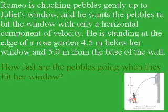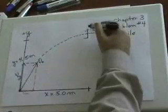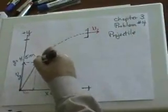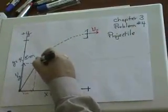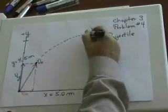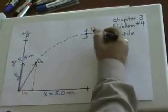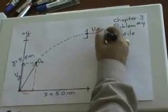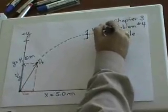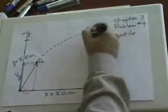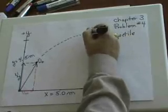How fast are the pebbles going when they hit her window? What I've drawn here is a window up here. He's throwing little pebbles, they're like small little rocks. And he wants it just to hit the pebbles, the pebble hits the window with a velocity Vx. And that's what we want to find out. What is the Vx velocity as that pebble just hits the window?